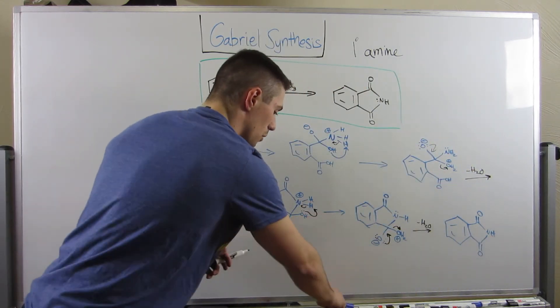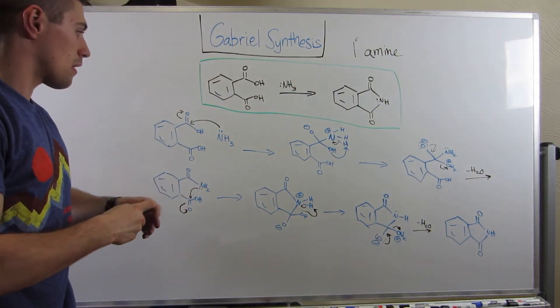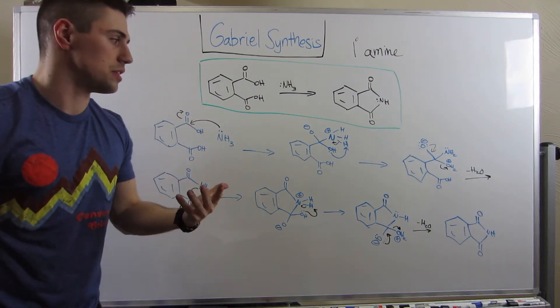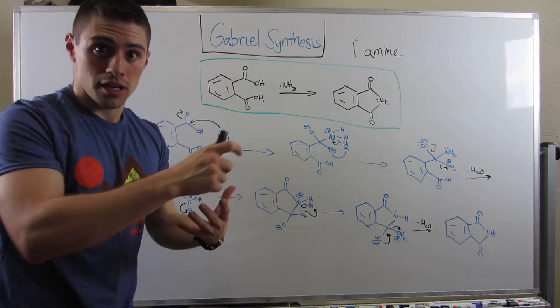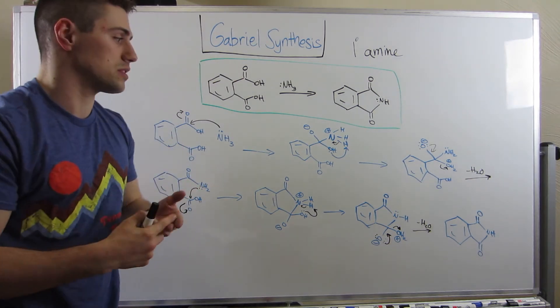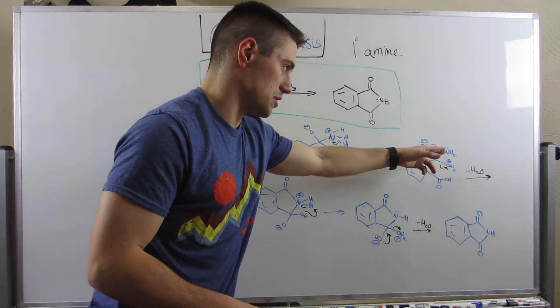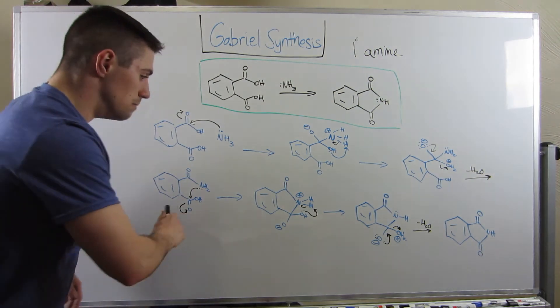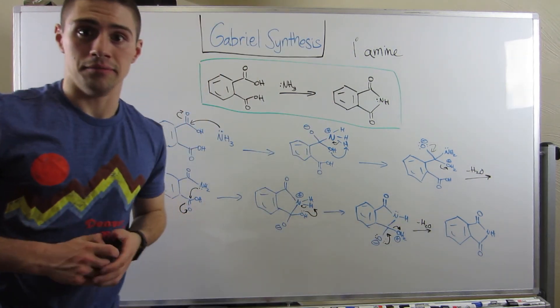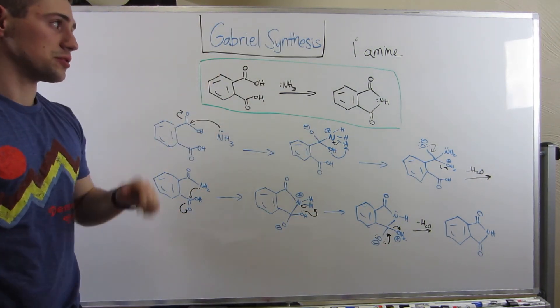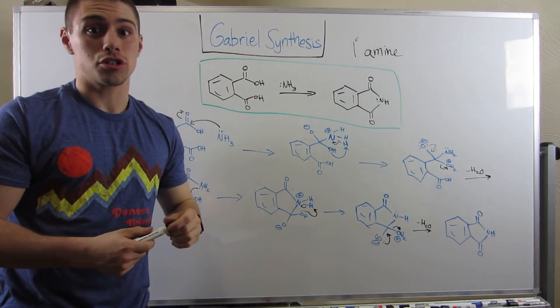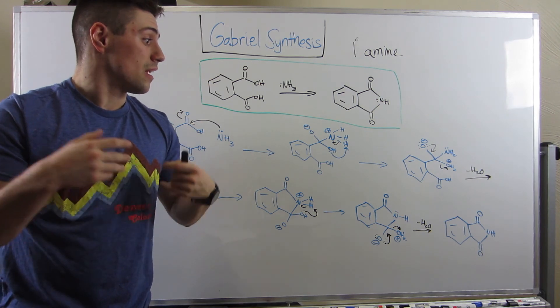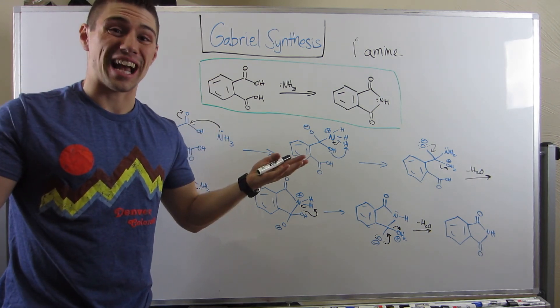So guys, this is nothing new. All we did here, attack the partially positive carbonyl. Form a tetrahedral intermediate. Swap protons. Deprotonate who you want to keep. Protonate who you want to leave. Swing electrons down. Eject your leaving group. Do it again. This is the Gabriel synthesis. I have you guys do this exact same mechanism on the worksheet. Worksheet two. So make sure you can do it. All right. Let's move on to another reaction.